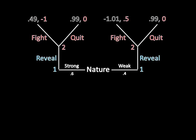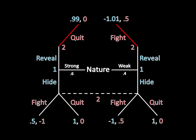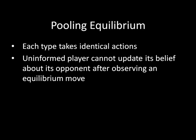Going back to the original game and erasing the things that we don't need, having done that backward induction, we know what's happening in the top half of the game tree. Our task now is to figure out what's going to happen in the bottom half, using pooling equilibria as our candidates. So what is a pooling equilibrium? Each type takes an identical action in a pooling equilibrium.